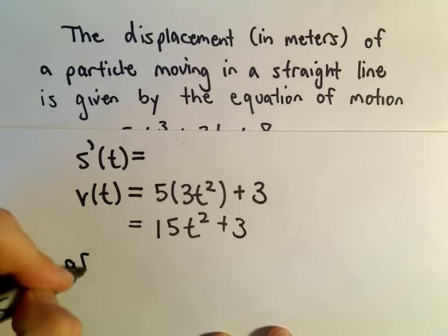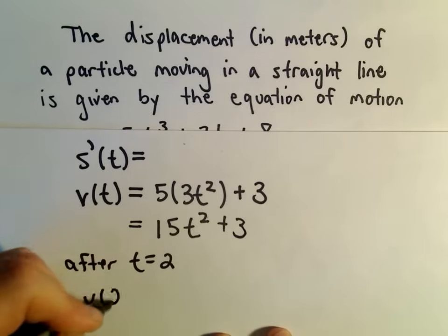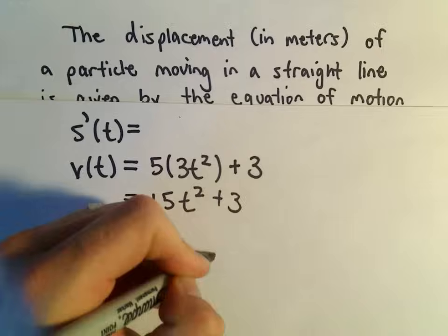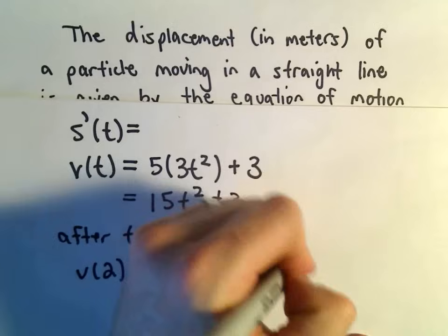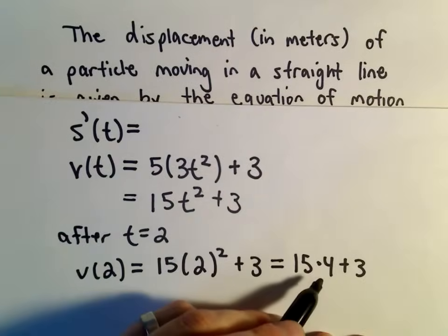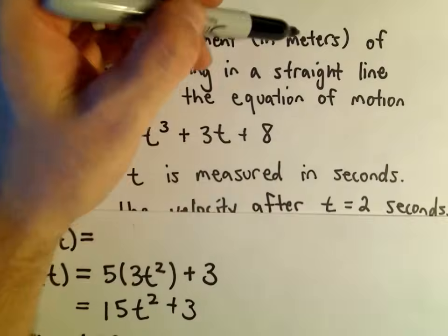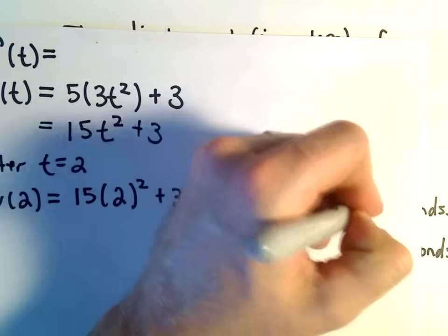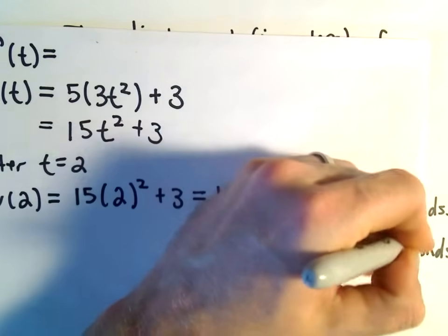Well, that means the velocity after 2 seconds, all we have to do is just plug it in. So if we plug in 2, we'll get 15 times 2 squared plus 3. 2 squared is 4, so we'll get 15 times 4 plus 3. 15 times 4 is 60, plus 3 will give us 63. And it was in meters and seconds, those were our units. So, it says your velocity is 63 meters per second.